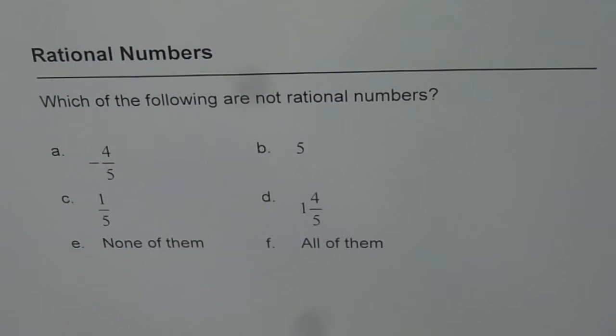Rational numbers. Which of the following are not rational numbers? Minus 4 over 5, 5, 1 over 5, 1 and 4 over 5, none of them, or all of them.